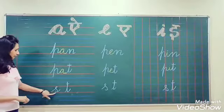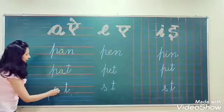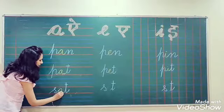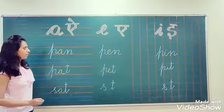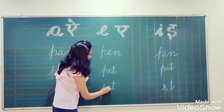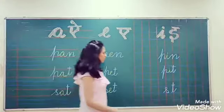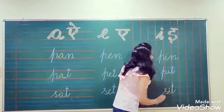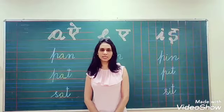Next I have S and T. When I insert A in them, it will become 'Sat' — you will open your mouth wider. And when I insert E in it, it will become 'Set' — it's a small sound. And when I insert I in them, it will become 'Sit'.